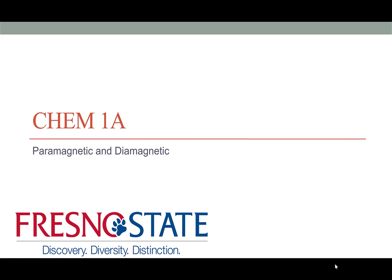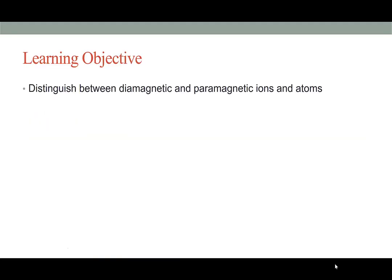Hello again students. In this CHEM 1a lesson we're going to learn about paramagnetism and diamagnetism. It makes sense that our learning objective is to distinguish between diamagnetic and paramagnetic ions and atoms.